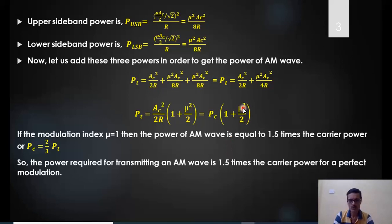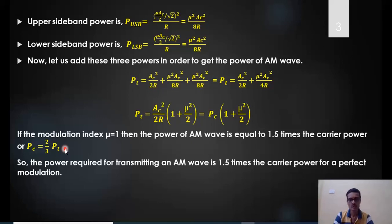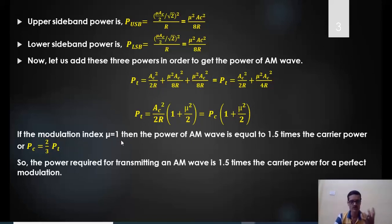When the modulation index μ = 1 (its maximum value), the total power is PT = PC × (1 + 1/2) = 1.5PC. Rearranging, PC = (2/3)PT. This indicates that the unmodulated carrier — which carries no information — requires two-thirds of the total power. Only the remaining one-third is useful sideband power, meaning two-thirds of the transmitted power is essentially wasted in DSB full carrier.